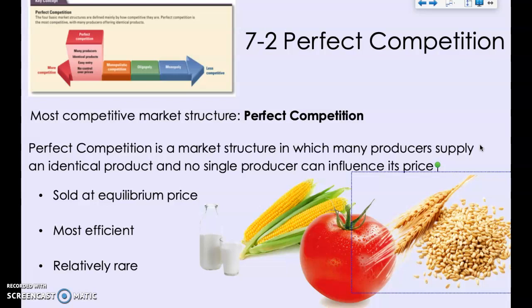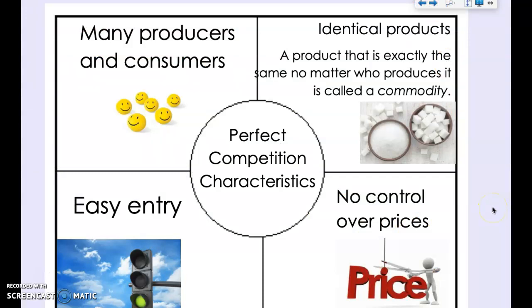The characteristics of perfect competition: perfectly competitive markets have a lot of producers and consumers, and that large number of participants promotes competition. There are a lot of people making identical products. In a perfectly competitive market the product is exactly the same no matter who's producing it — we call that a commodity. Examples include mostly agricultural products: grains, cotton, sugar, crude oil.